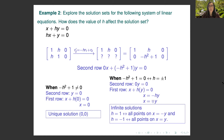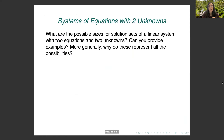If negative h squared plus one equals zero — which happens when h equals 1 or negative 1 — then the second row becomes 0y equals 0, giving no information from that row. Going back to the first row: x plus h times y equals 0, so x equals negative h times y. When h equals positive one, x equals negative y, giving infinitely many solutions on the line x equals negative y. When h equals negative one, x equals positive y, giving infinitely many solutions on the line x equals y.